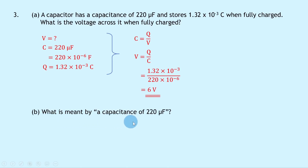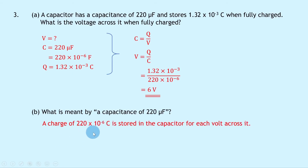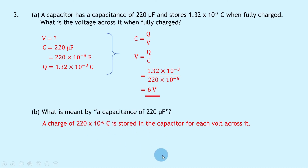Part B then says what is meant by a capacitance of 220 microfarads? Here you're being asked to state the definition of capacitance, but you also need to use this value of 220 microfarads in your answer. So you would say that a capacitance of 220 microfarads means a charge of 220 times 10 to the minus 6 coulombs is stored in the capacitor for each volt across it. Here we've referred to our definition of capacitance as the charge stored per volt, and included the value written out in full form without the prefix.